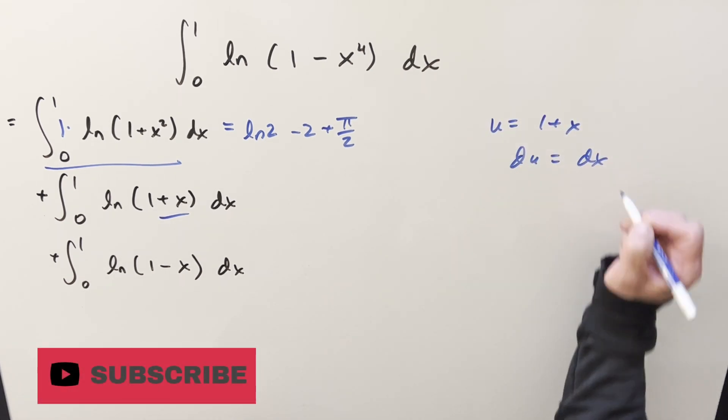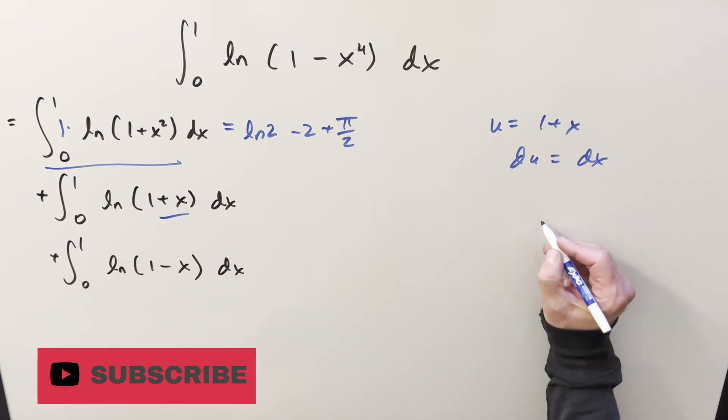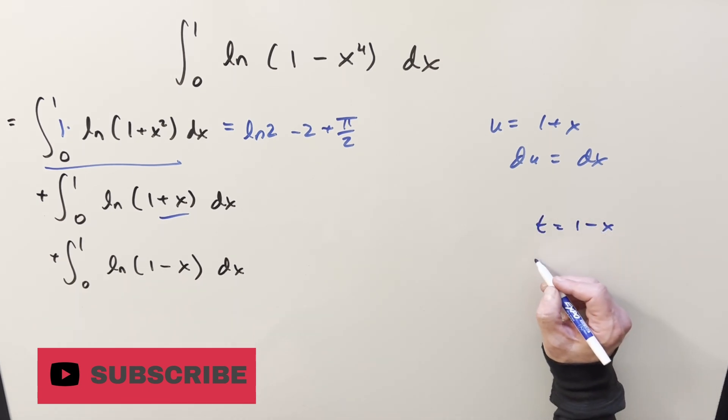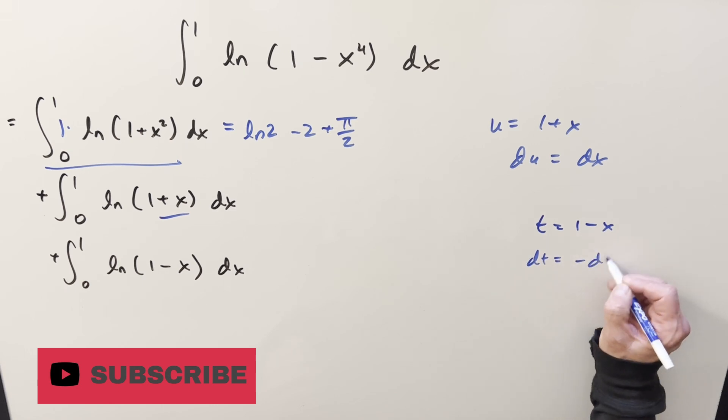And then on this one here, I'll do a t substitution, one minus x, then dt is going to be minus dx.